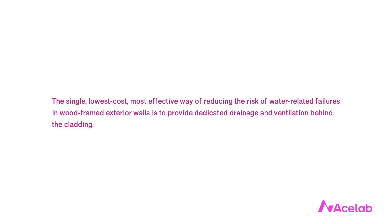While our focus tends to be on the character of the water resistive barrier, the single lowest-cost, most effective way of reducing the risk of water-related failures in wood-framed exterior walls is actually to provide dedicated drainage and ventilation behind the cladding. The inclusion of a water control membrane in drained walls is standard, but the code provisions related to the drainage and ventilation space continue to evolve in response to modern materials. For example, the code requires a one-inch gap behind brick claddings in drained walls.